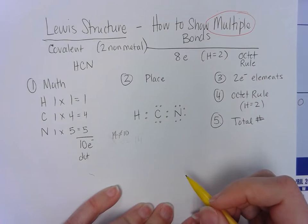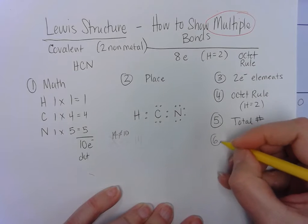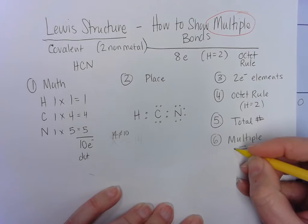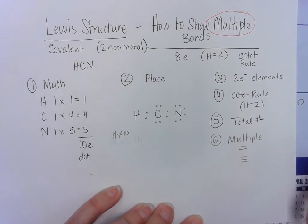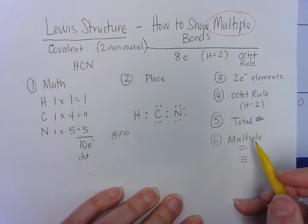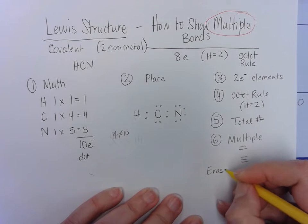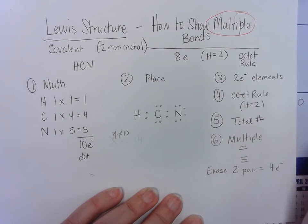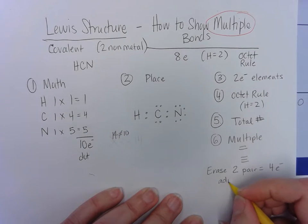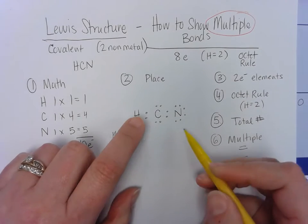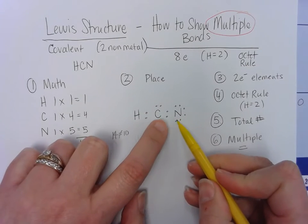When we're doing this now, we need to have, step number six would be, we need a multiple bond. So you can have a double, or you can have a triple. And we'll come back to which is the best choice in a minute. When you do a multiple bond, you're going to erase two pair. And if you think about it, two pair is really four electrons. So we're going to erase four electrons. You need to erase off of adjacent elements. They have to be touching.